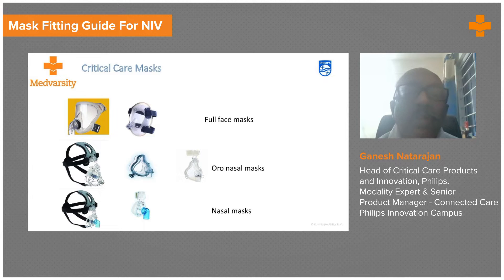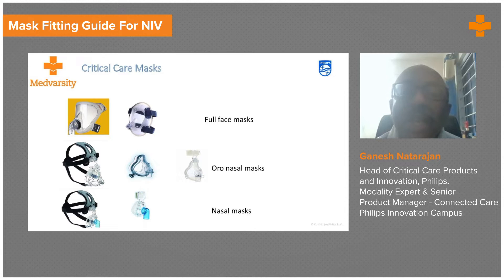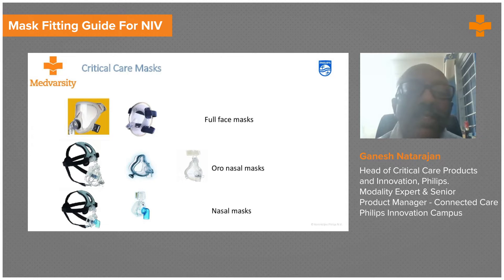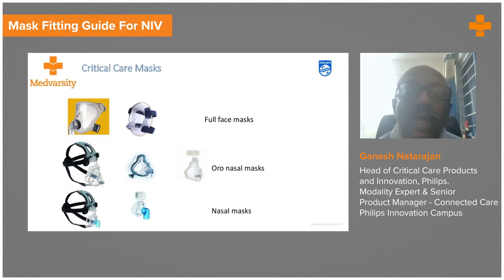There are three key kinds of masks: a full face mask, an oral nasal mask, and a nasal mask. There are also nasal pillows used for OSA, but in ICUs and step-down units these three are used most often. The full face mask covers from the eyes down to the chin, the oral nasal mask covers from the top of the nose to the chin, and the nasal mask covers just the nose.